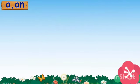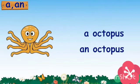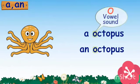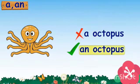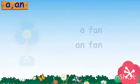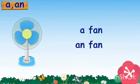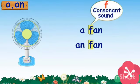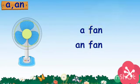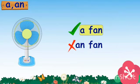Here are some more examples. Octopus — it starts with the letter O, which is a vowel sound, so we use AN octopus. Fan — F starts with a consonant sound, so we use A fan.